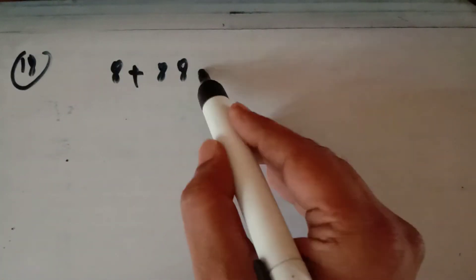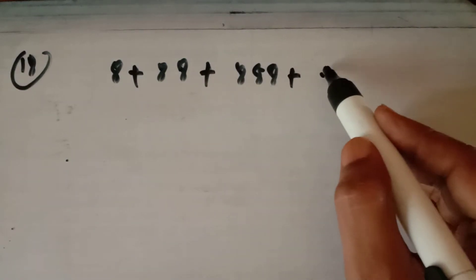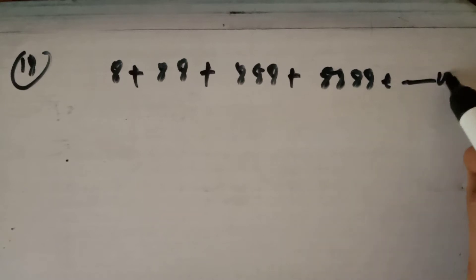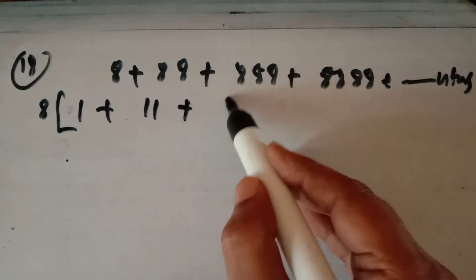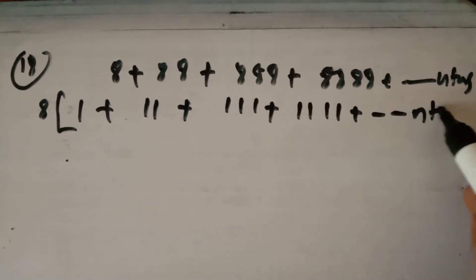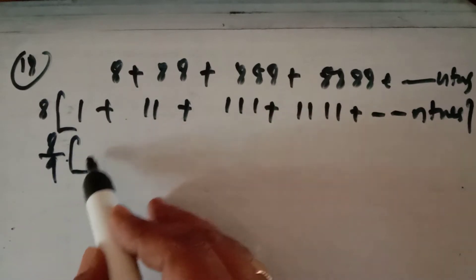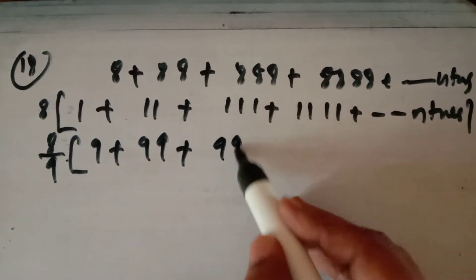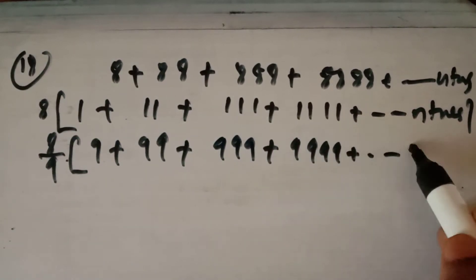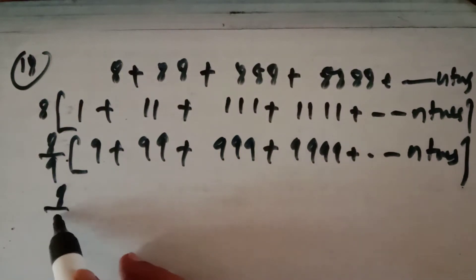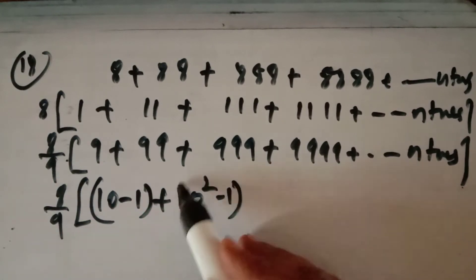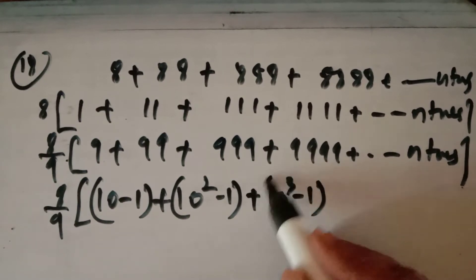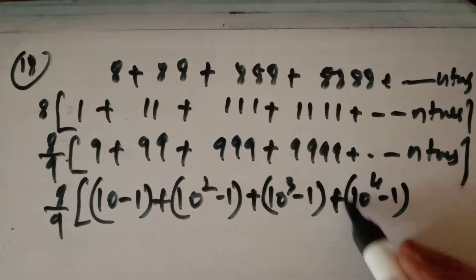Question number 18 requires finding the sum of a special sequence up to n terms. In these types of questions, you first take the common number as a factor, then multiply and divide by 9. You rewrite 9 as (10-1), 99 as (100-1), 999 as (1000-1), and so on up to n terms.